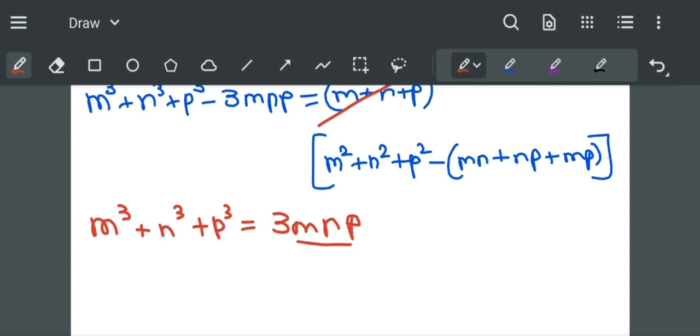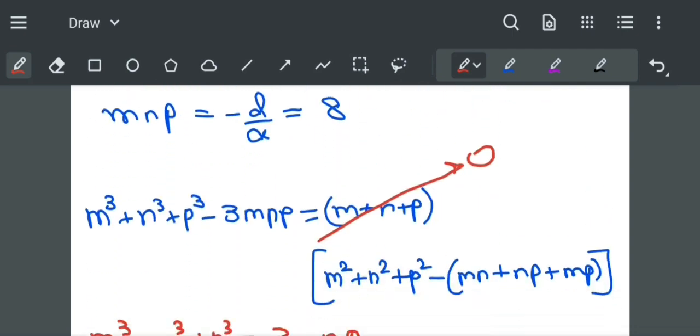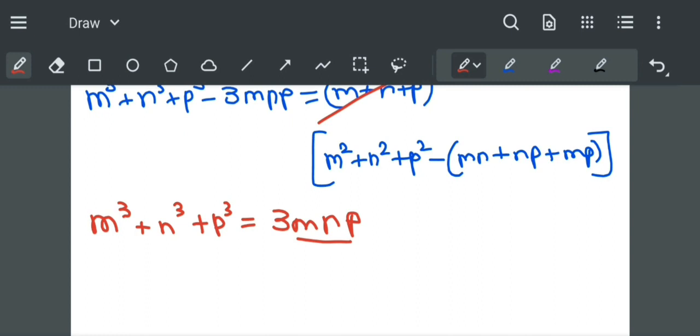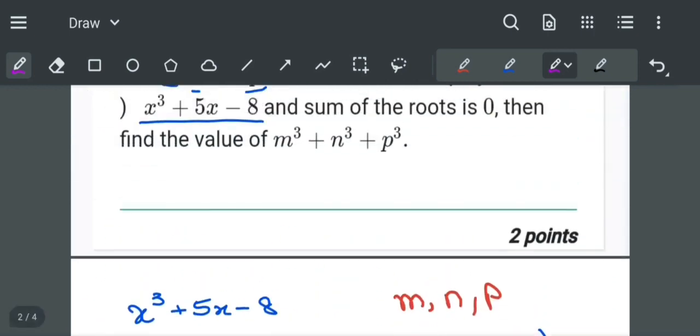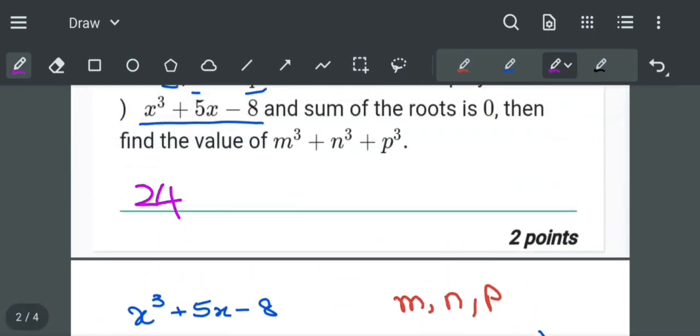mnp is the product of the roots which is equal to 8. So the required answer m cube plus n cube plus p cube is equal to 3 multiplied by 8, which is equal to 24. Thank you.